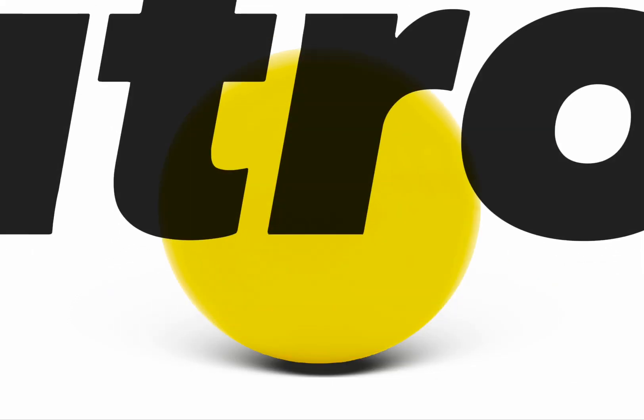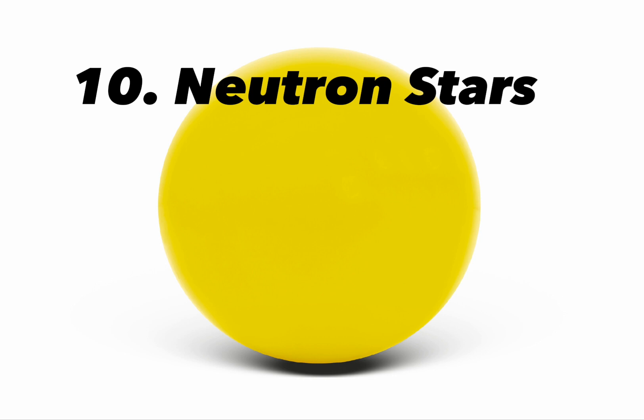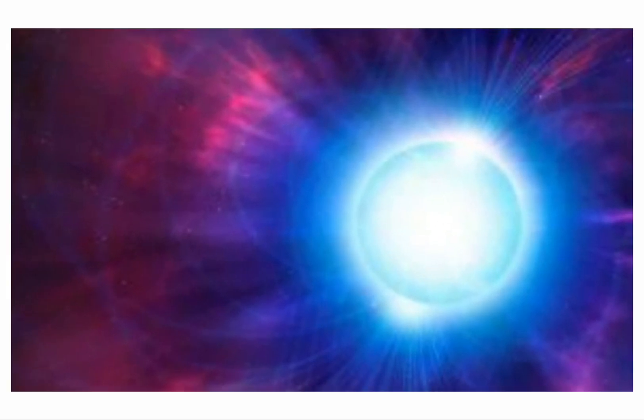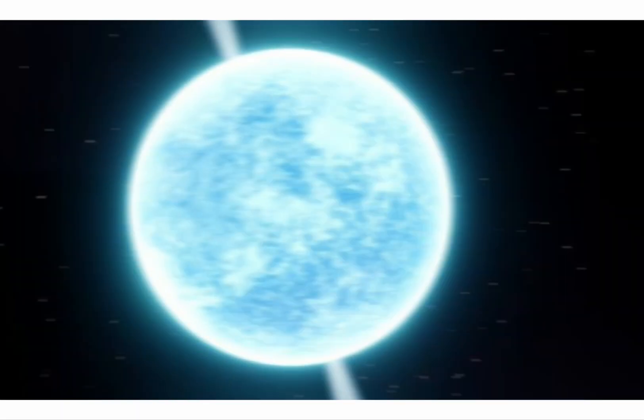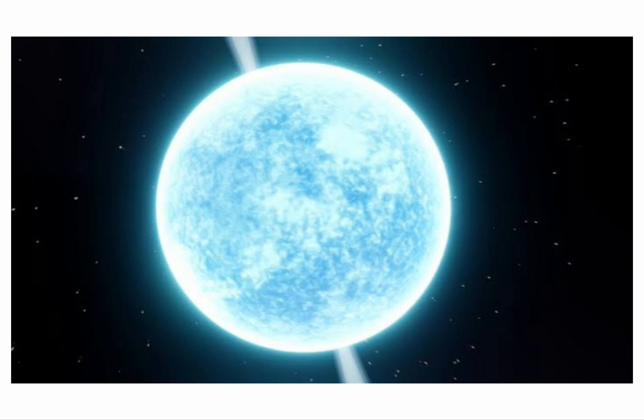10. Neutron stars. Neutron stars are incredibly dense celestial objects primarily composed of tightly packed neutrons. They form from the remnants of massive star supernova explosions, with gravity so intense that a teaspoon of neutron star material would weigh billions of tons on Earth. These exotic objects provide a unique laboratory for studying the behavior of matter under extreme conditions and are important in astrophysics.